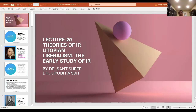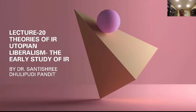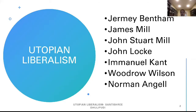Namaskar students, today we will be moving to Lecture 20. We have finished the Realist School. We will be moving to the second most important traditional debate, and that is Utopian Liberalism and the early study of international relations. This is the other theory which is important in international relations, and we will look into who are the major thinkers and those who have influenced international relations.